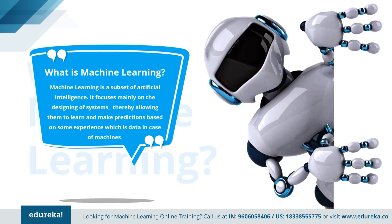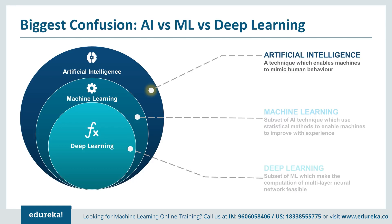These programs are designed to learn and improve over time when exposed to new data. Let's discuss one of the biggest confusions people have — they think that AI, machine learning, and deep learning are all the same. They are wrong. Artificial intelligence is a broader concept of machines being able to carry out tasks in a smarter way. It covers anything which enables the computer to behave like humans. Think of the famous Turing test to determine whether a computer can think like a human being — if you're talking to Siri on your phone and you get an answer, you're already very close to it.